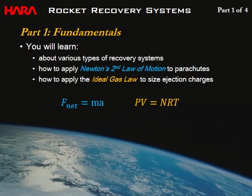So in Part 1, we're going to cover fundamentals of rocket recovery systems — various types of recovery systems, how to apply Newton's second law of motion to parachutes, and how to apply the ideal gas law to sizing ejection charges. The unmanipulated equations are: net forces acting on a body equals mass times acceleration (F=ma), and pressure times volume equals the amount of gas times the universal gas constant times temperature (PV=nRT).